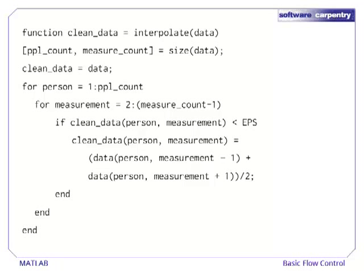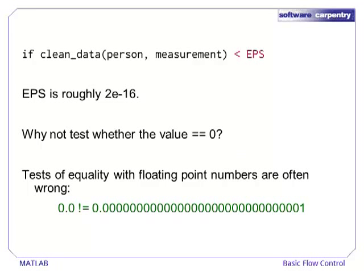Now, for each matrix element, which we index by the variables person and measurement, we check for a very small value. If the value is nearly zero, we reassign it to the average of the left and right values. Note that if those values are also zero, then linear interpolation might still return an erroneous value.